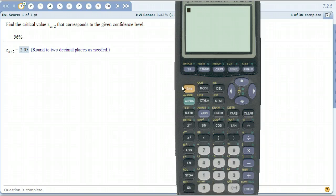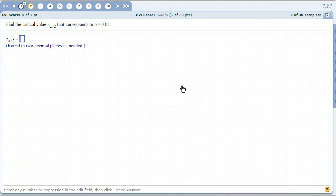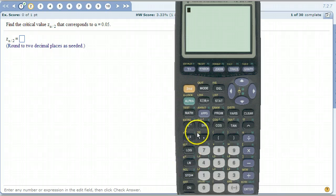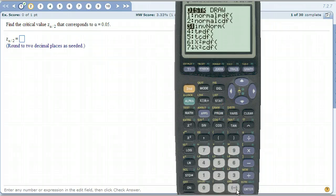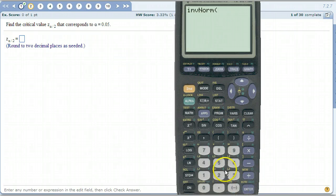But in problem number 2, they're giving you alpha. Alpha is 0.05. So we don't have to subtract this from 1 this time. So we got inverse normal. Not subtracting it from 1, just 0.05. That is alpha. And then this says alpha divided by 2.